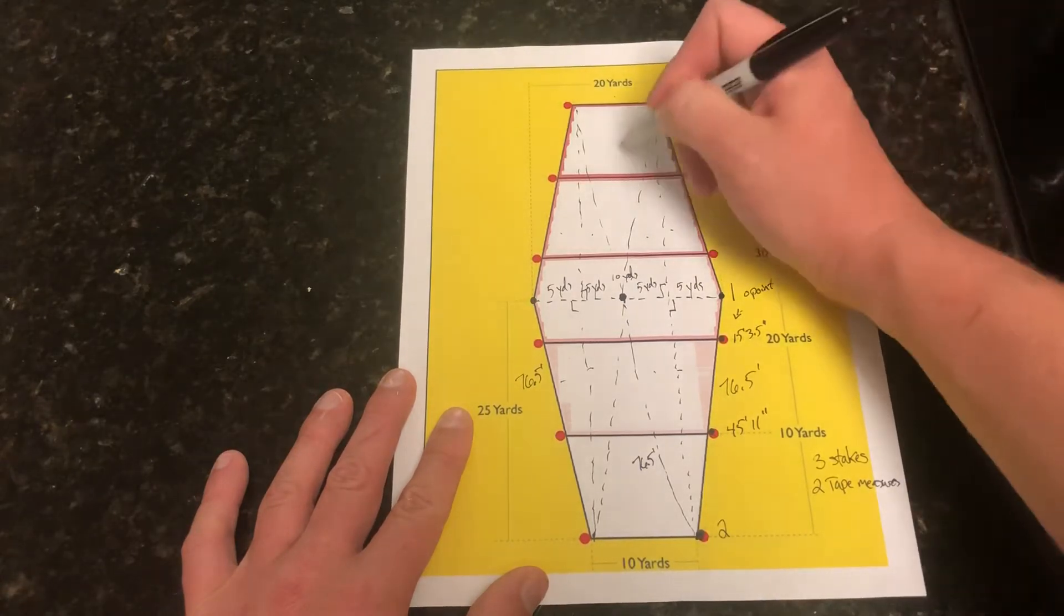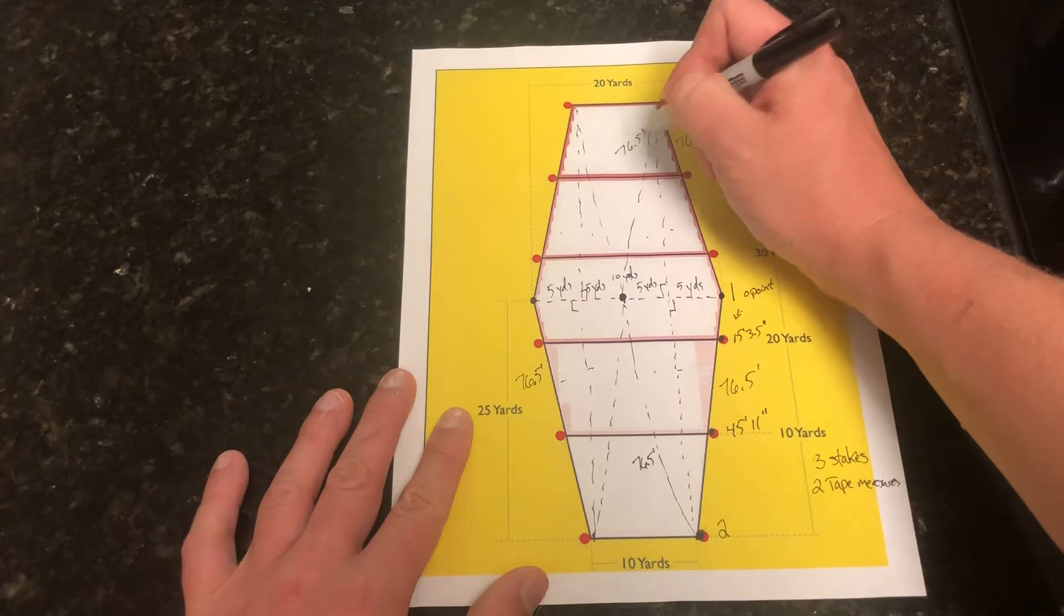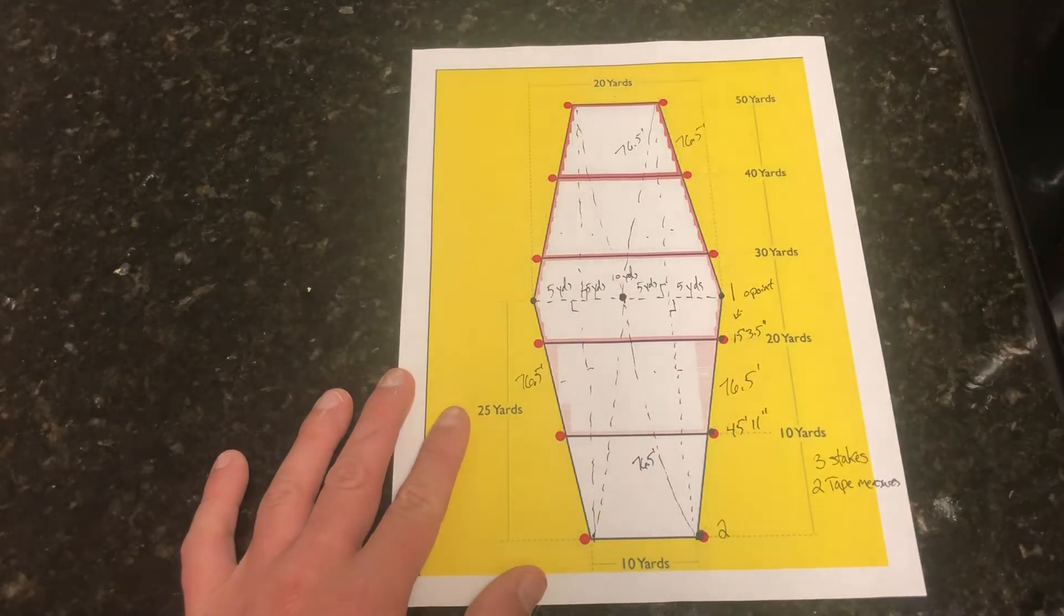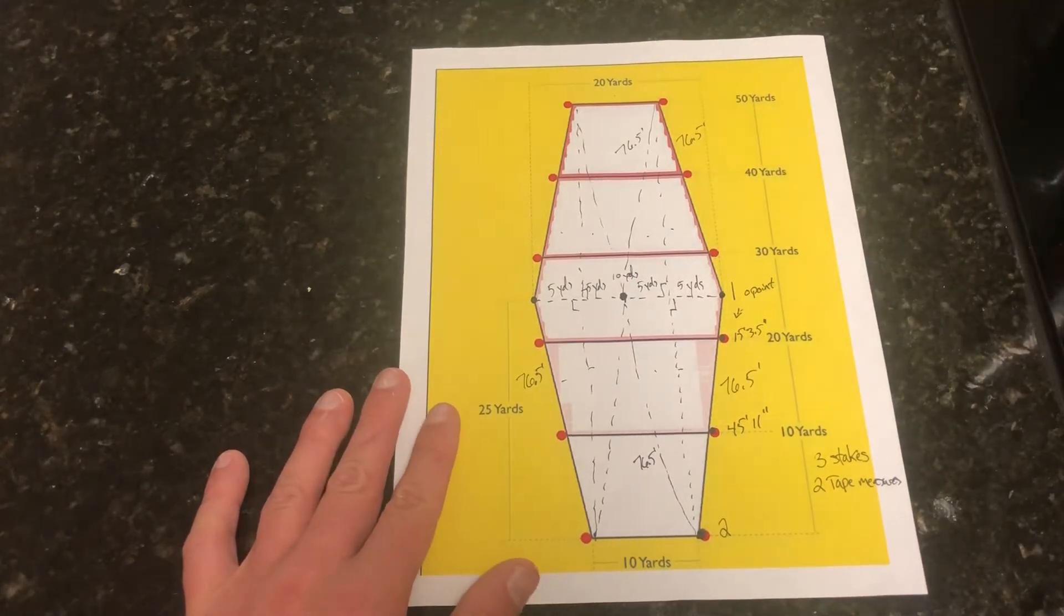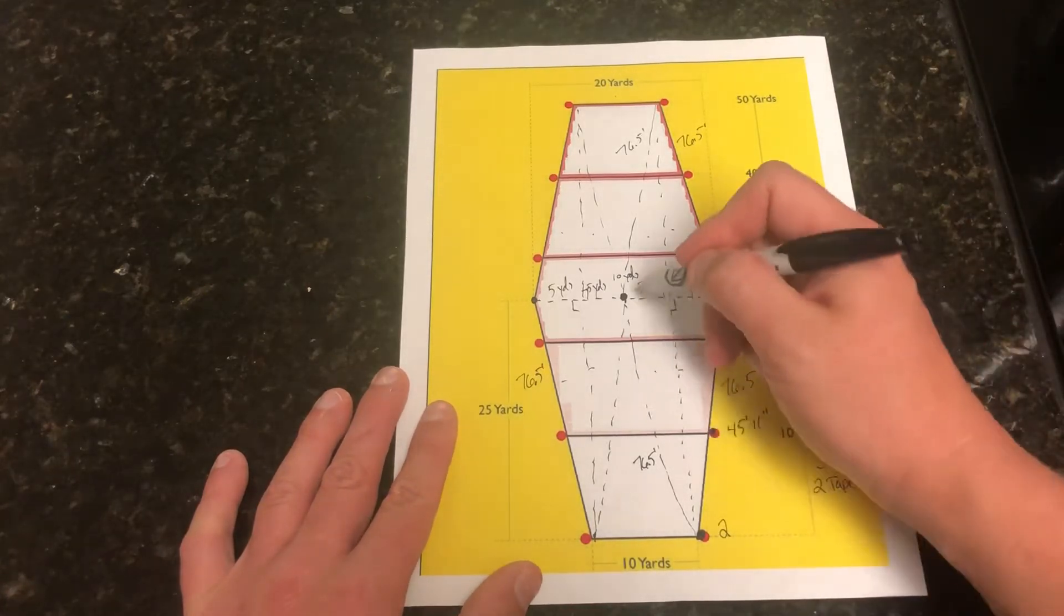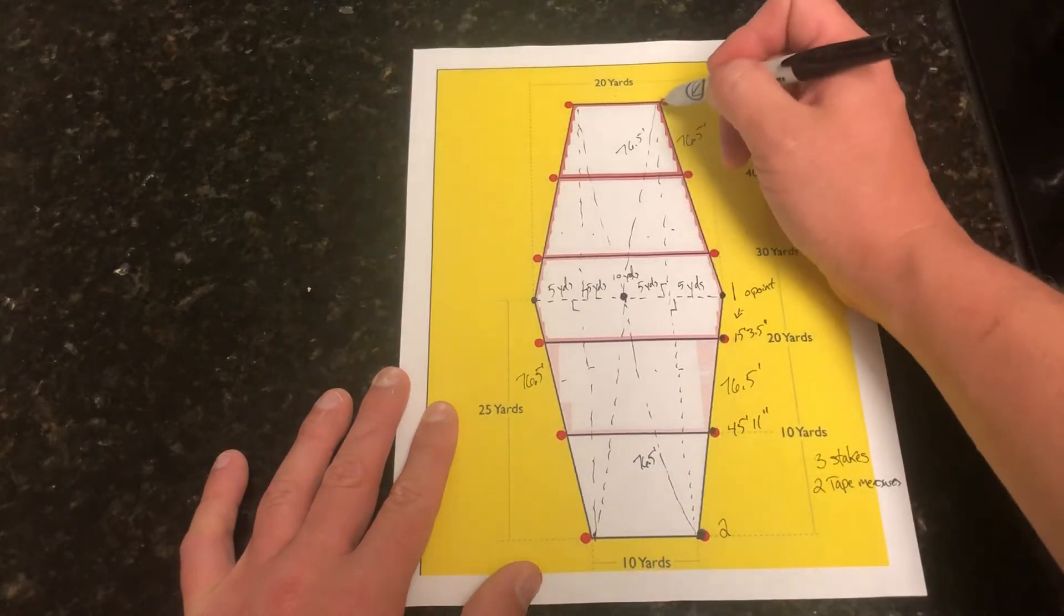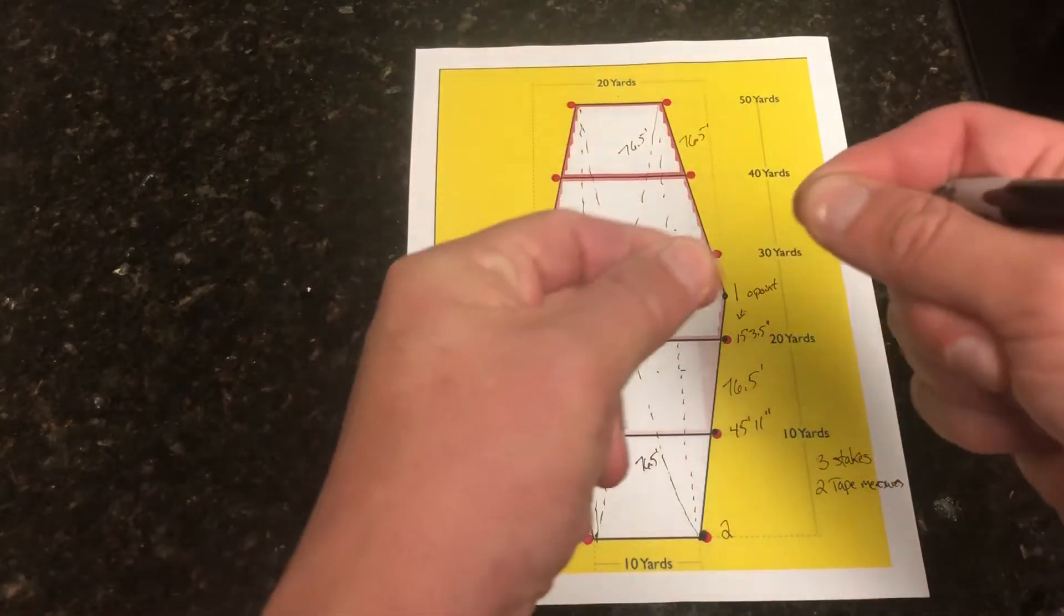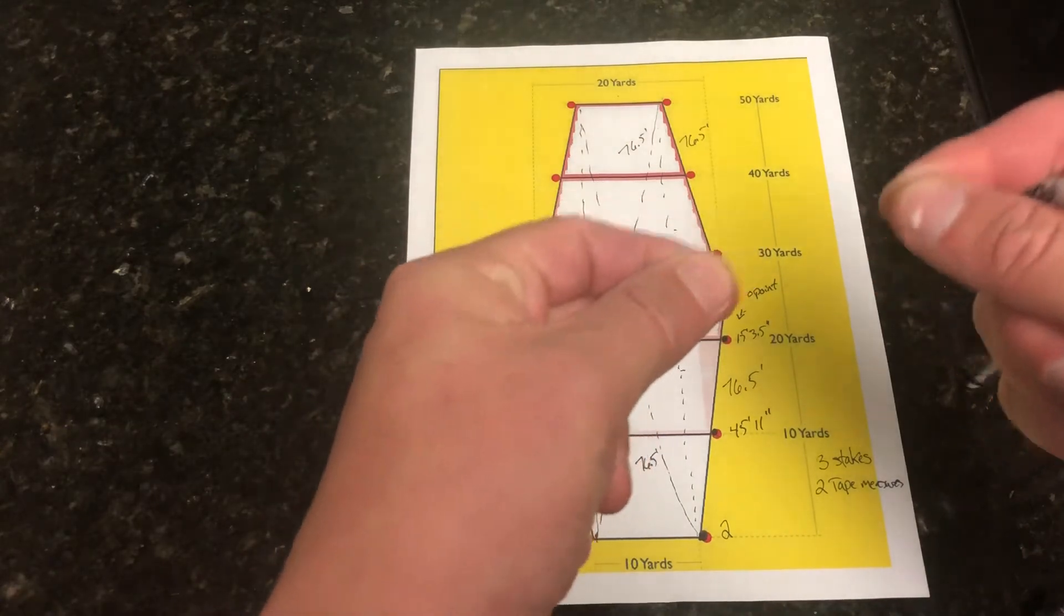The way I like to do it is to build this corner, then this corner. That way I can leave my tape measure attached here and attached here. So I'll go ahead and walk my butt down here and just do the same thing: 76 and a half feet, 76 and a half feet, pull them tight. I promise you they'll only meet at one spot.